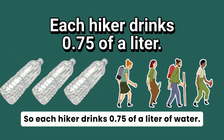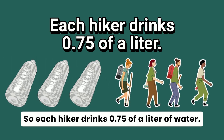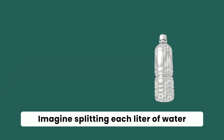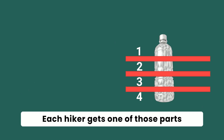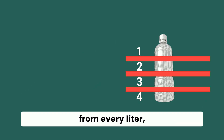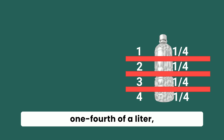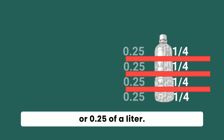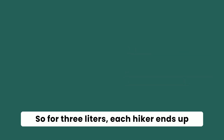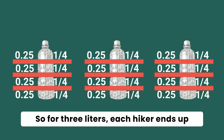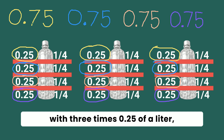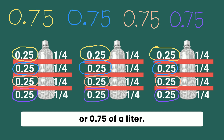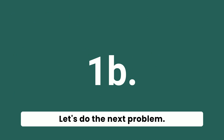So each hiker drinks 75 hundredths of a liter of water. Imagine splitting each liter of water into four parts. Each hiker gets one of those parts from every liter — one-fourth of a liter, or 25 hundredths of a liter. So for three liters, each hiker ends up with three times 25 hundredths of a liter, or 75 hundredths of a liter.